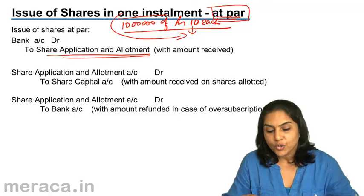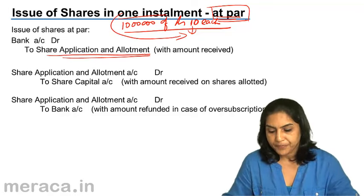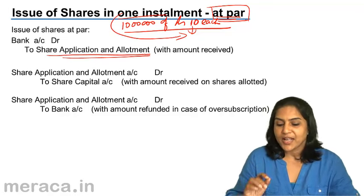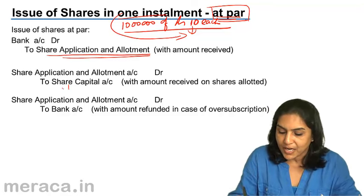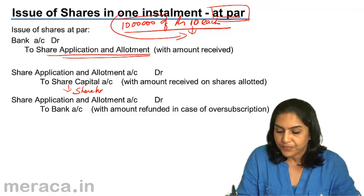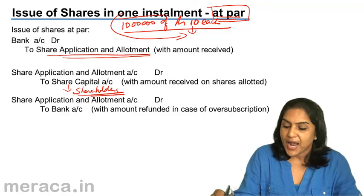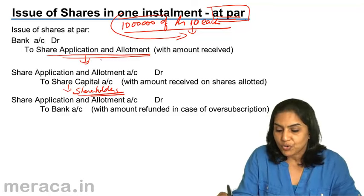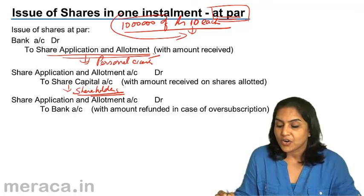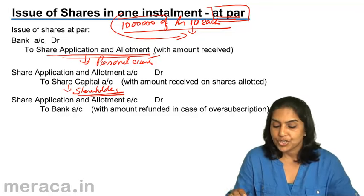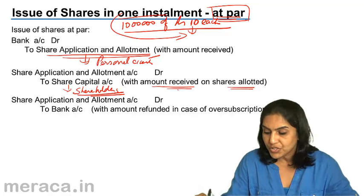The directors will then go through the share applications. If any of them have to be rejected, they would be removed. And if all is fine, shares would be allotted. When shares are allotted, the money lying in the share application and allotment account is transferred to the share capital account. Share capital account is nothing but the shareholder's account. Therefore, share application and allotment account is debited to share capital with the amount received on shares allotted.